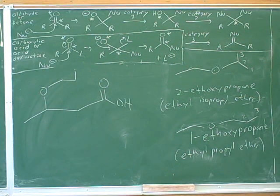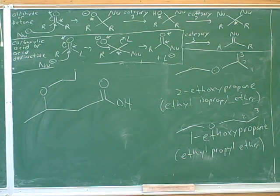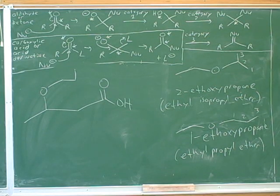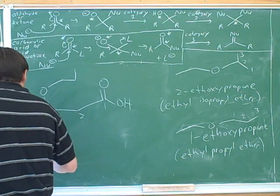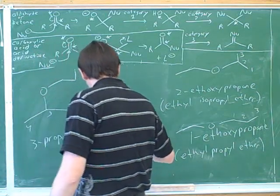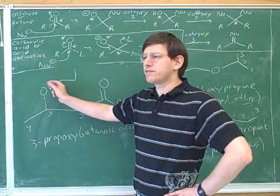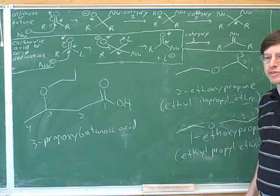Let's try naming this. Looks like both of you have figured this out. So again, we named the ether as a substituent, and this would give us 3-proboxybutanoic acid. That's pretty similar to some of the other examples we've seen.